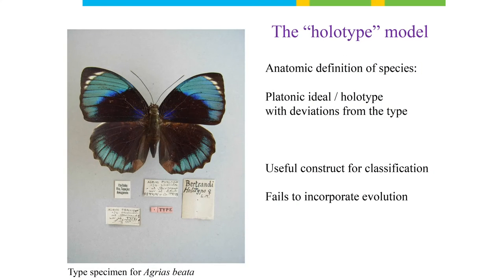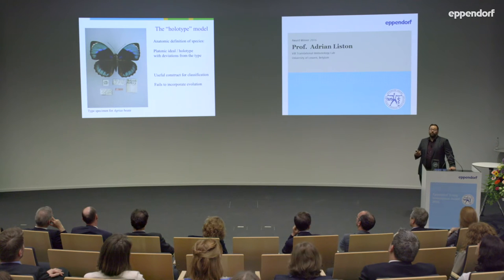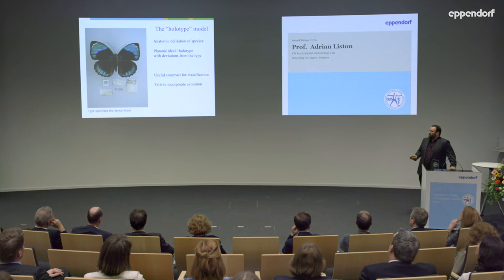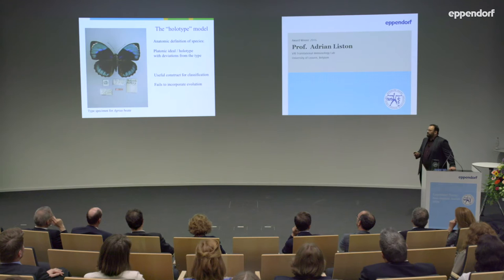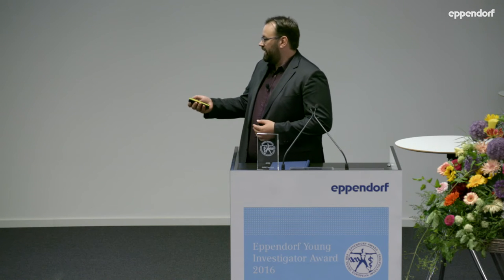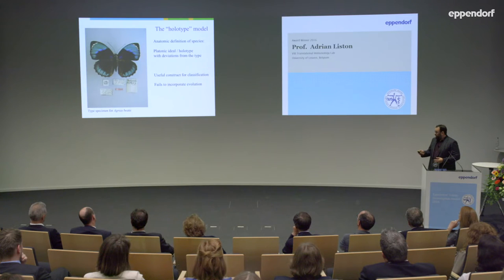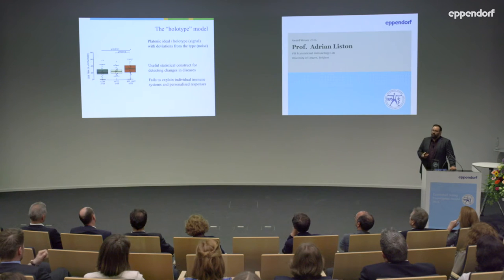I think one of the things holding us back in immunology is reliance on what I'll call the holotype model. In the anatomical definition of species, we use a single platonic ideal — often boiled down to a single specimen, the holotype. For example, this is the type specimen — the holotype — of a species of butterfly, considered the ideal platonic version. Every other individual is a deviation from this butterfly. It's a useful construct for classification, but it hits a limit when you try to incorporate evolution, because the species is constantly changing.